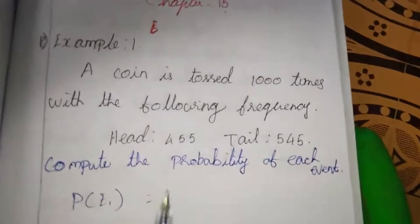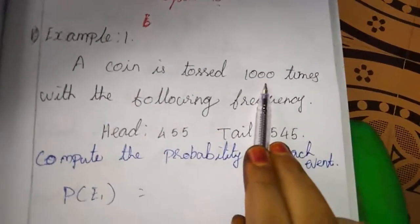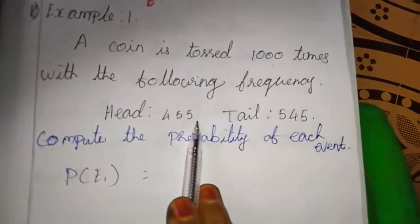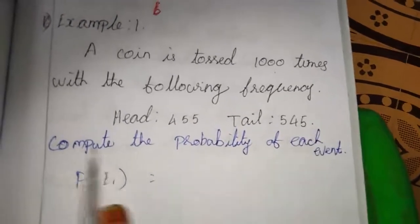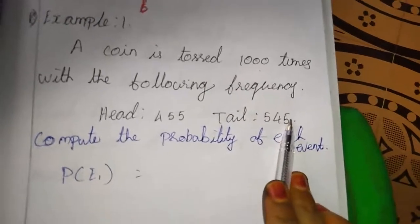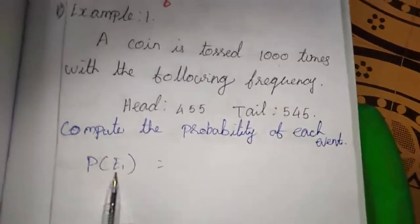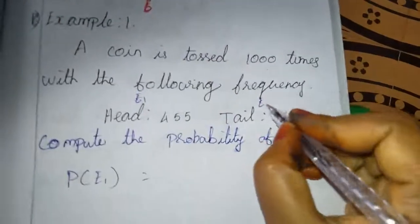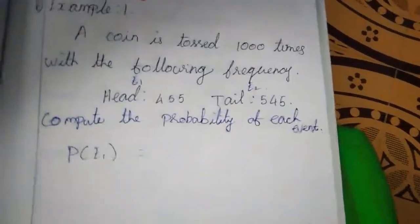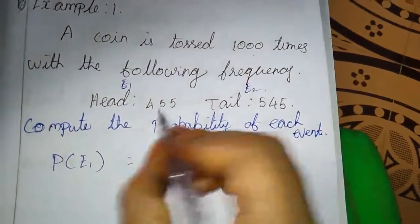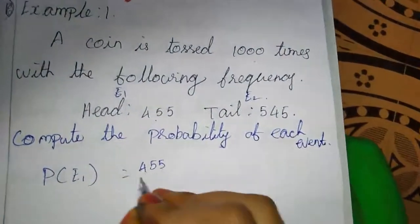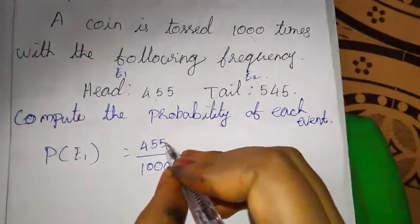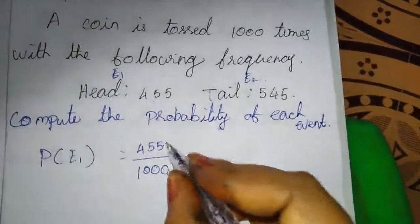What they are telling means: one coin is tossed one thousand times. Head came 455 times, tail came 545 times. We need to find the probability of two events. We can write P of E1, where head is E1 and tail is E2. Probability of E1 equals 455 divided by 1000, since the coin is tossed 1000 times and we got head 455 times. This is the probability of the first event, that is getting the head.